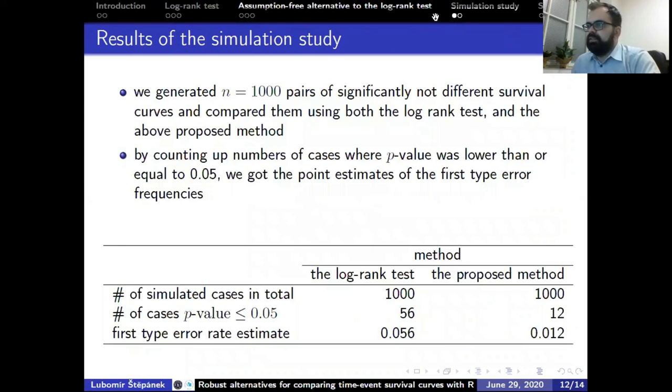We simulated a thousand pairs of non-different curves. By counting up numbers of cases where p-value was lower than or equal to 0.05, we got point estimates of the first type error frequencies. While the first type error rate of the log-rank test was about 0.056, the first type error rate of the proposed method was lower, only about 0.012.